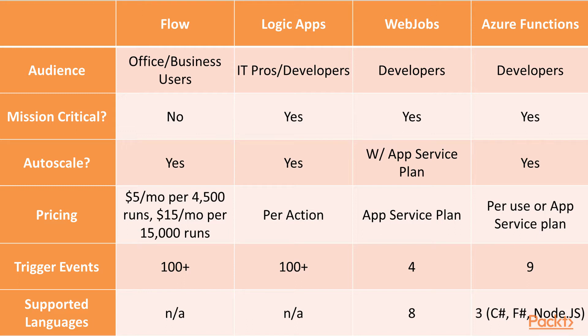For trigger events, you have a lot more options with Flow and Logic Apps — there are so many integrations from GitHub to Bitbucket to Dropbox — integrations that you don't get with Web Jobs or Azure Functions. However, Azure Functions does support more triggers than Web Jobs does. For supported languages, Flow and Logic Apps don't really support languages — they just have their in-browser editor. But Web Jobs and Azure Functions support many languages, and Web Jobs actually supports the most languages out of the bunch.